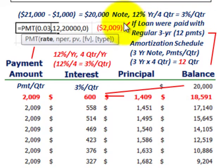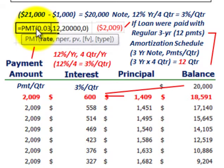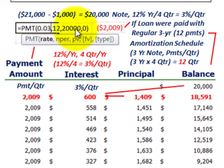First, let's look at what the payment would be had the car dealer not offered this special deal — just regular payments for three years, which is 12 quarterly payments. Using a financial calculator or Excel, with a 3% interest rate per quarter, 12 quarters, and a present value of $20,000, the payment amount per quarter comes out to approximately $2,009.